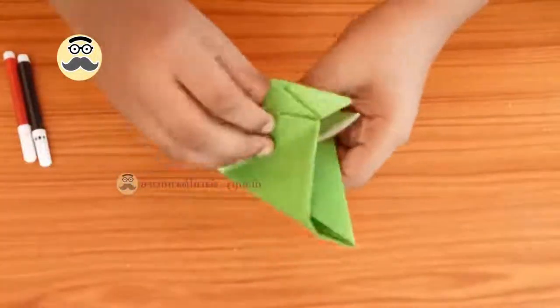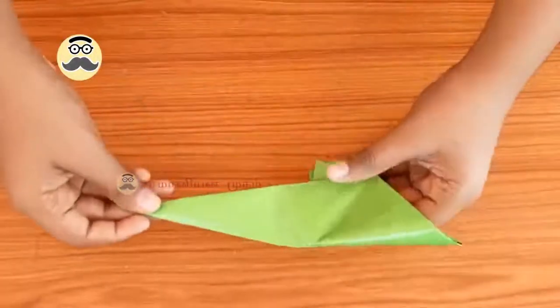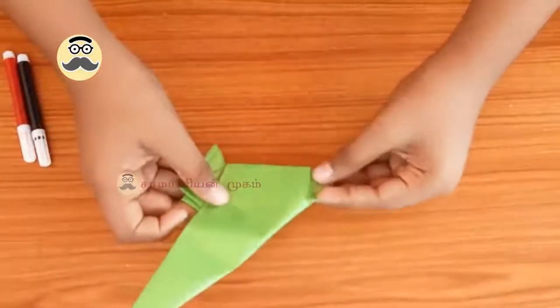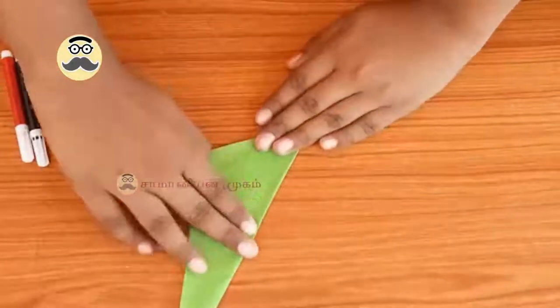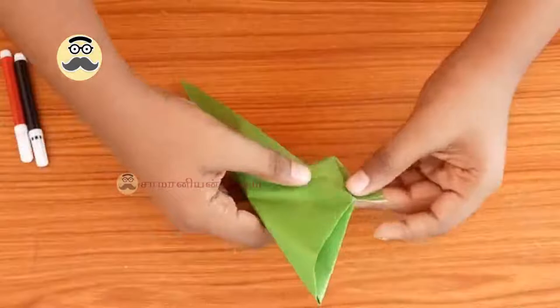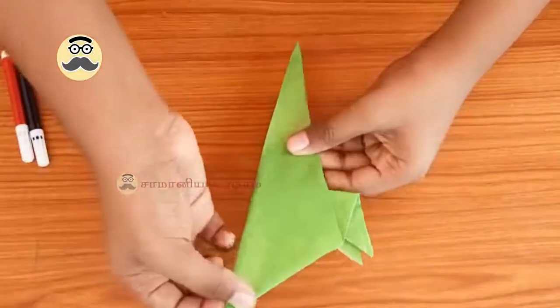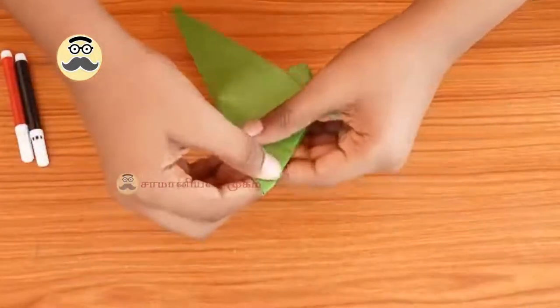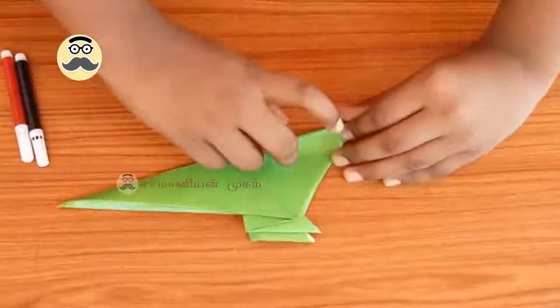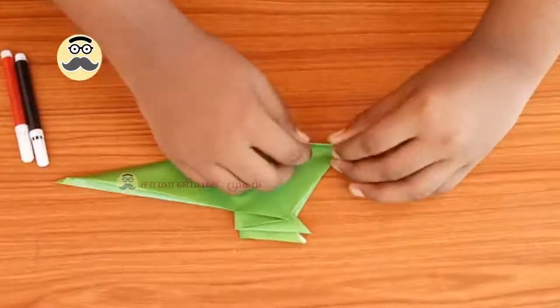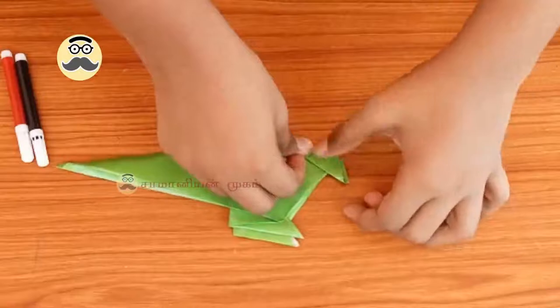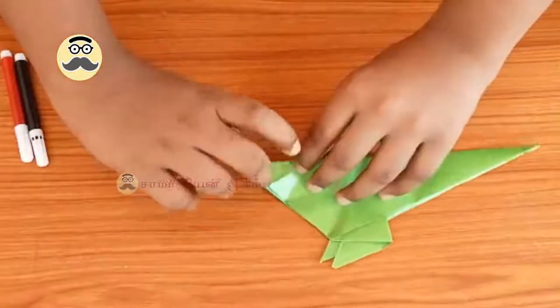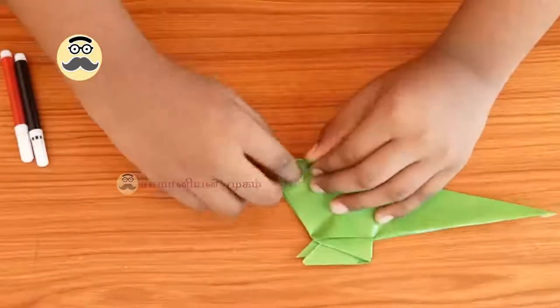Fold it in half. Now almost our parrot is ready. Now we want to make our parrot's head. First fold this part on one side and close it nicely. Then fold that part to the opposite side.